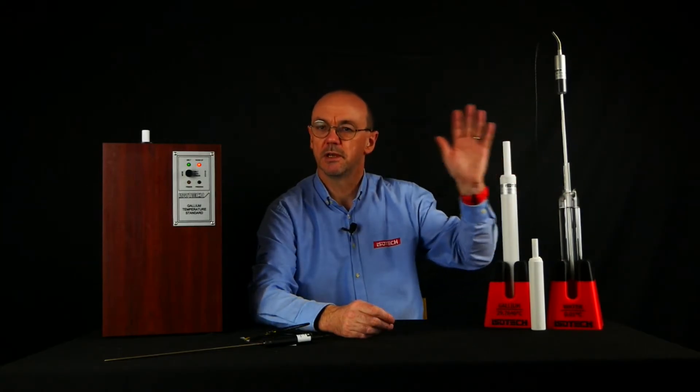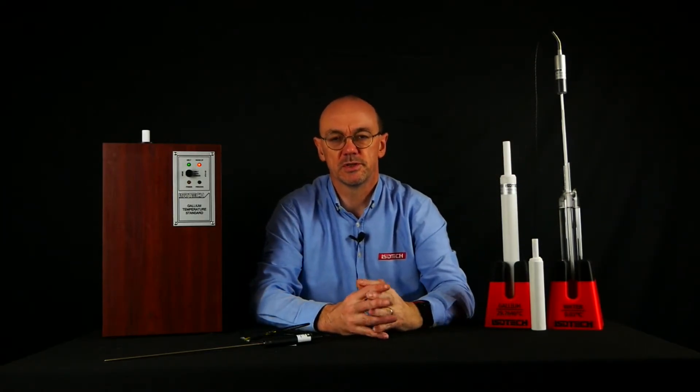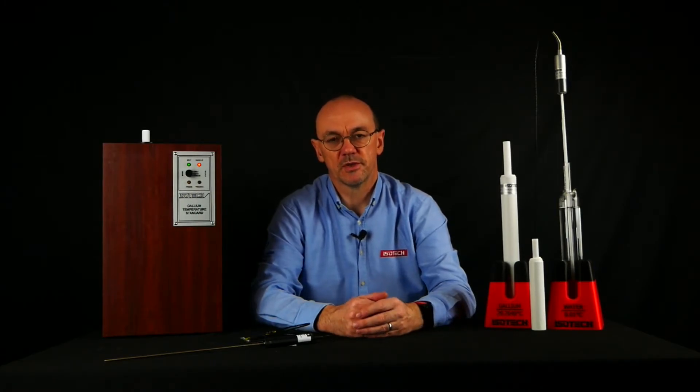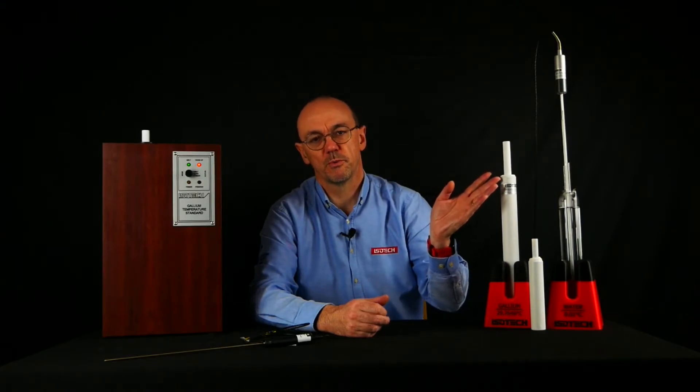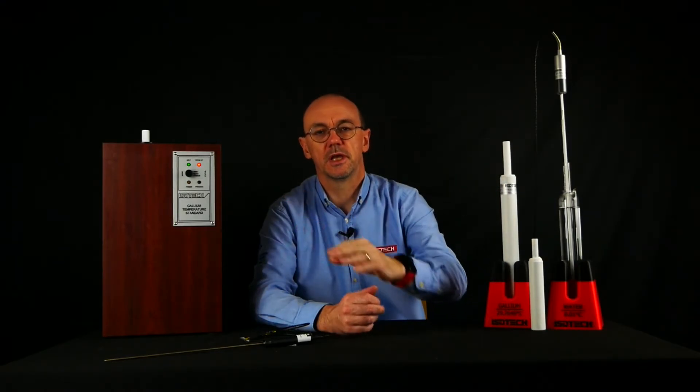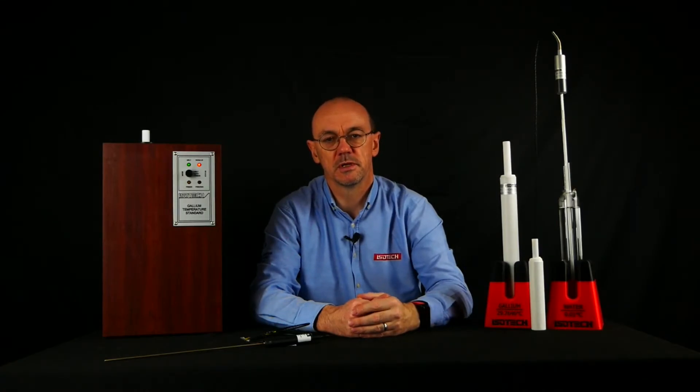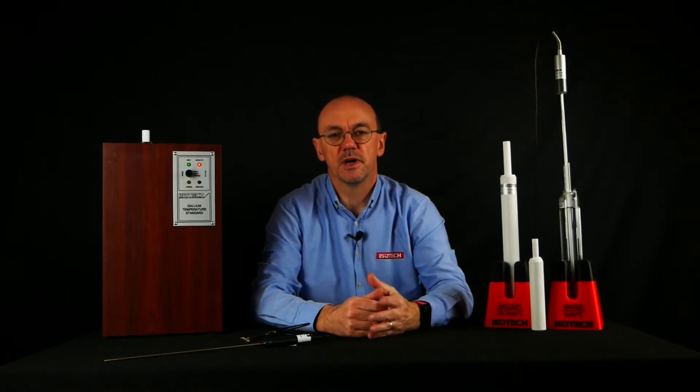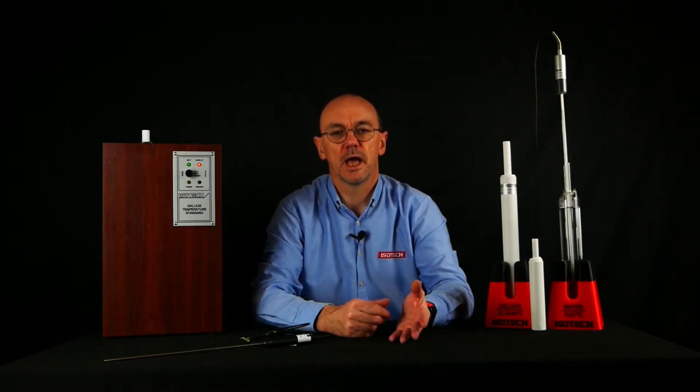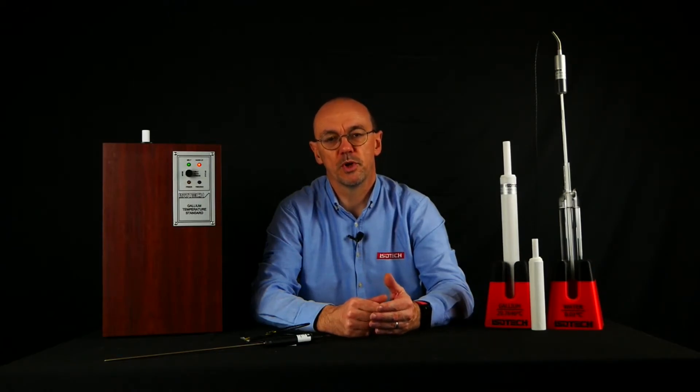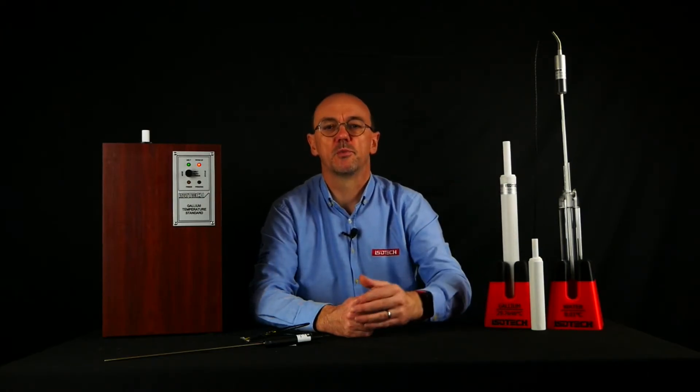If we put an SPRT into the gallium cell and measure the resistance at the melting point of gallium, then we've got extra information. One very useful parameter to have is the ratio of the resistance of the SPRT at the water triple point to the resistance at the gallium melt point. The ITS-90 specifies for an SPRT that this ratio, often referred to as W gallium, has a value greater than 1.11807. That information relates to the purity of the platinum wire.